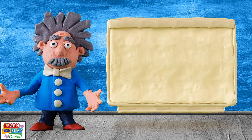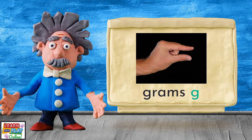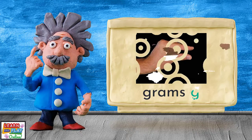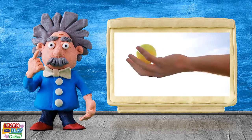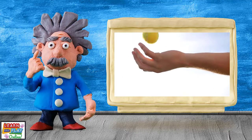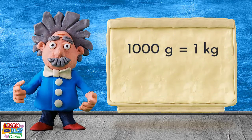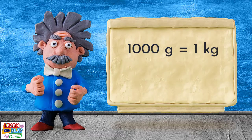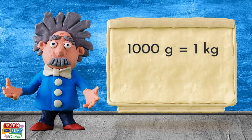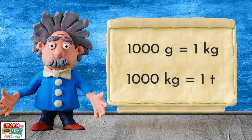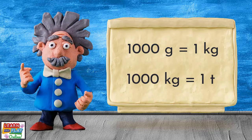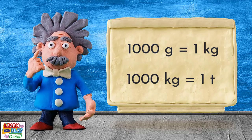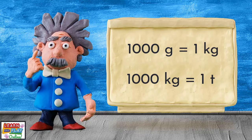Let's recap on what we have learned today. Grams are the smallest unit of mass that we use in everyday life, and we use grams to refer to things that are light in weight. There are 1000 grams in a kilogram, and we use kilograms to refer to things that are on the heavier side. When you have 1000 kilograms, that means you have 1 ton, and tons are used to refer to extremely heavy things.